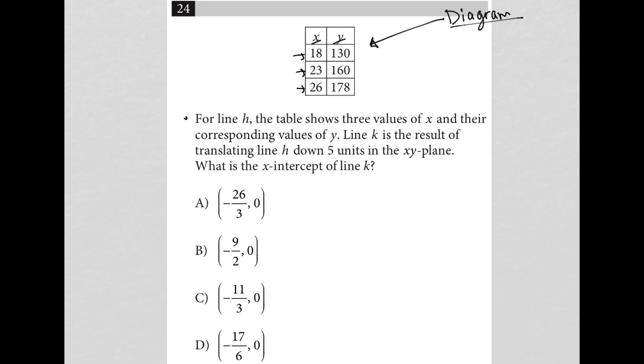The question says for line H, the table shows three values of X and their corresponding values of Y. Line K is the result of translating line H down five units in the XY plane. So what does that mean?